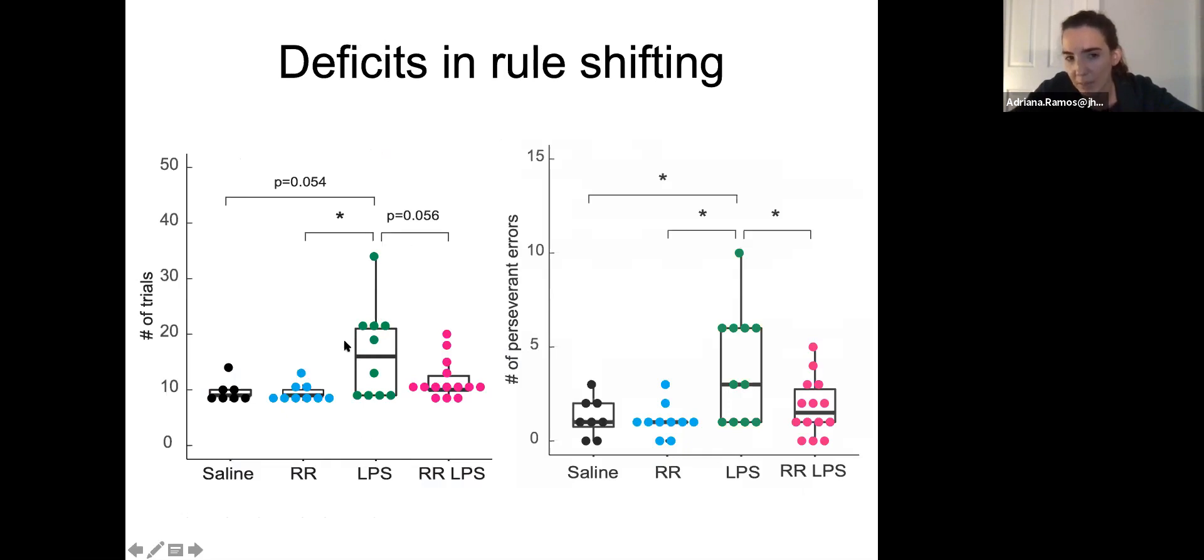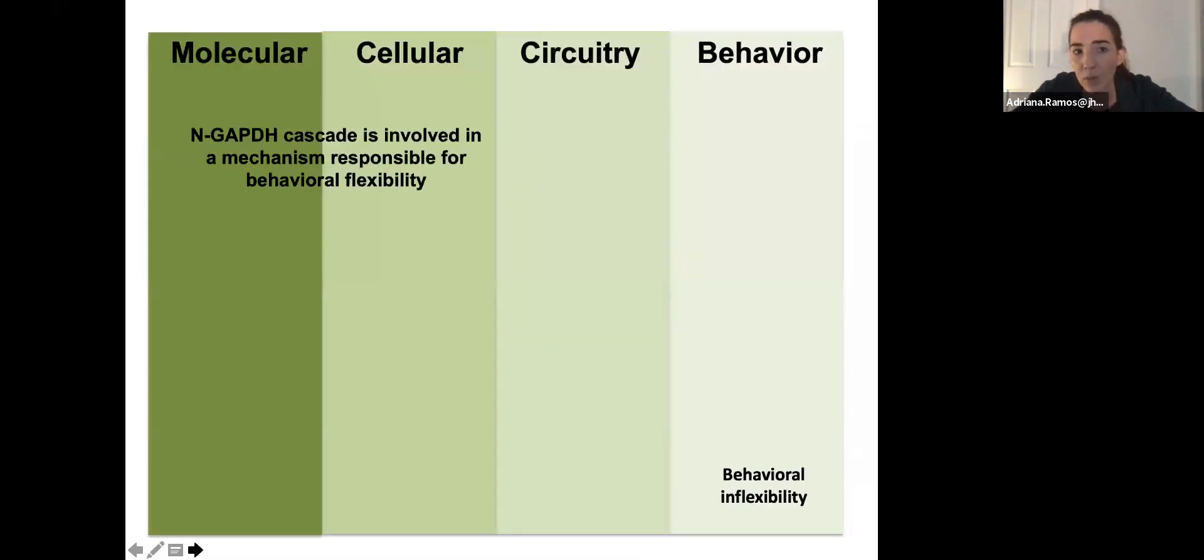When we characterized that the LPS mouse model presented deficits, we decided to treat with the drug that blocks the binding between GAPDH and Siah1 in order to see if the nuclear GAPDH has a role in the regulation of this behavior. As you can see, the animals treated with ARAR performed better. The panel on the right highlights just the perseverative errors that tell us that the mice are not performing randomly, but that they get stuck to what they previously learned on the previous task.